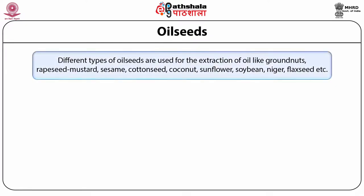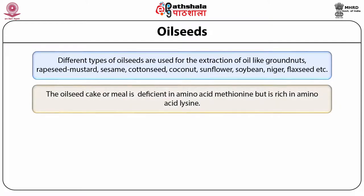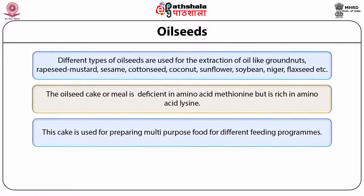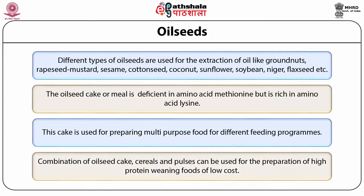Different types of oilseeds used for extraction of oil include groundnuts, rapeseed mustard, sesame, cottonseed, coconut, sunflower, soya bean, niger, flax seeds, etc. The oilseed cake or meal is deficient in amino acid methionine but rich in amino acid lysine. This oilseed cake is used for preparing multipurpose food for different feeding programs. A combination of oilseed cake, cereals, and pulses can be used for the preparation of high-protein weaning foods at low cost.